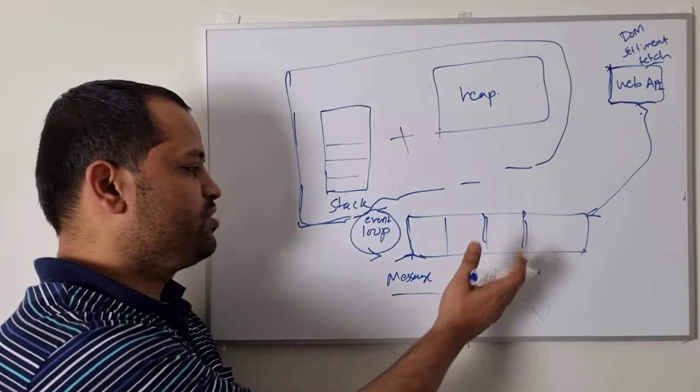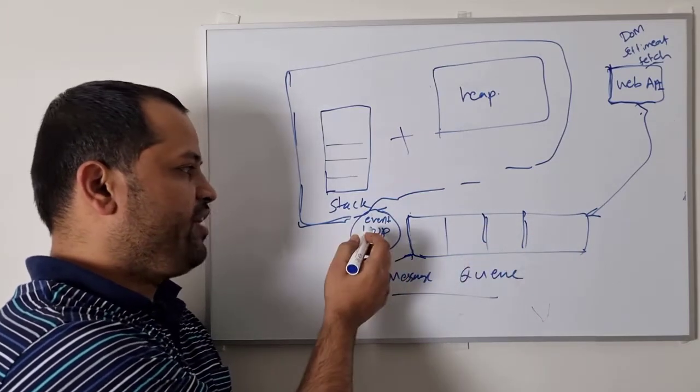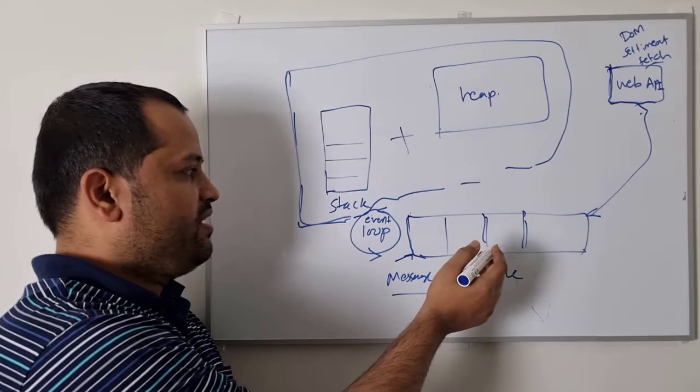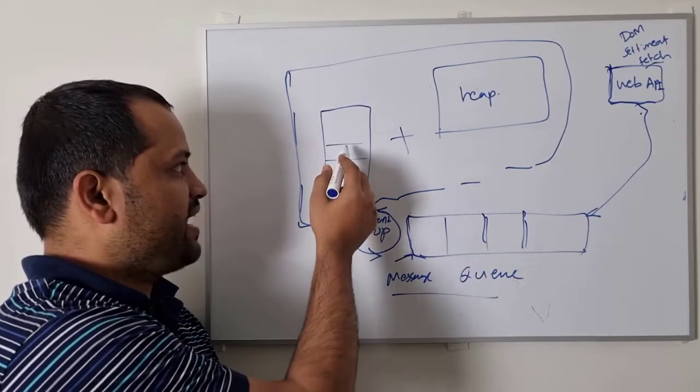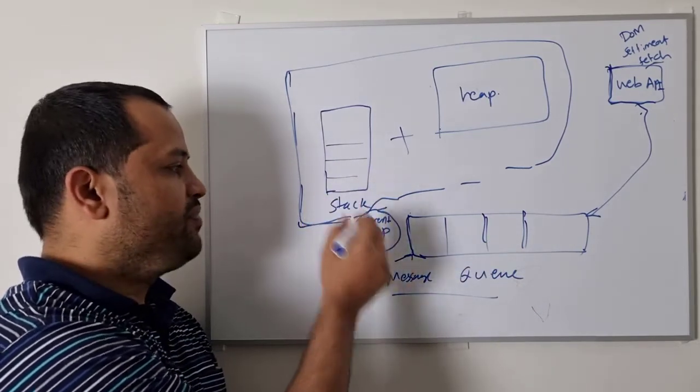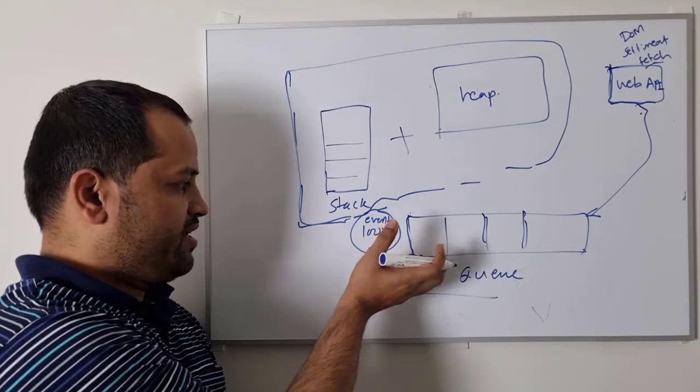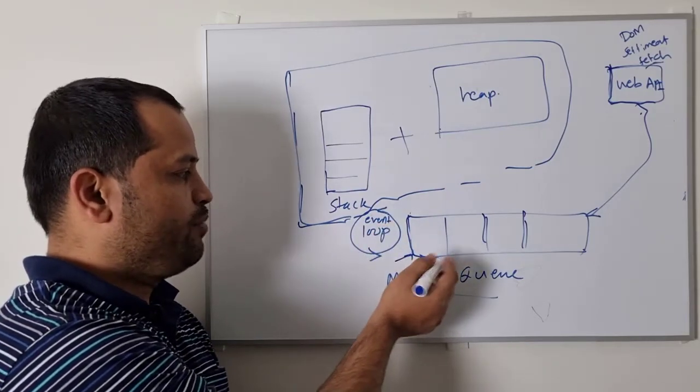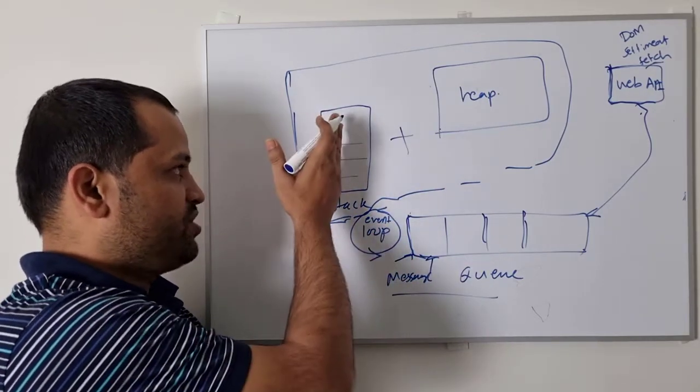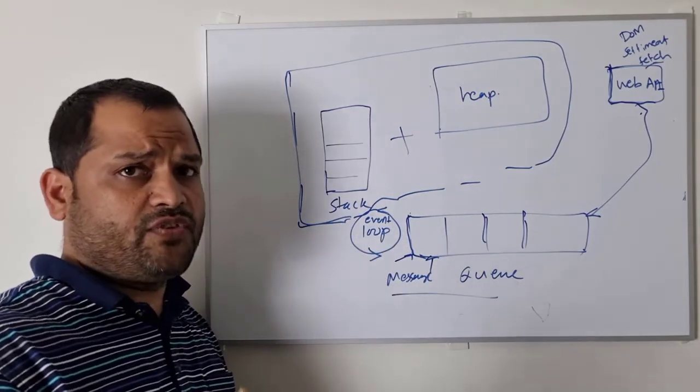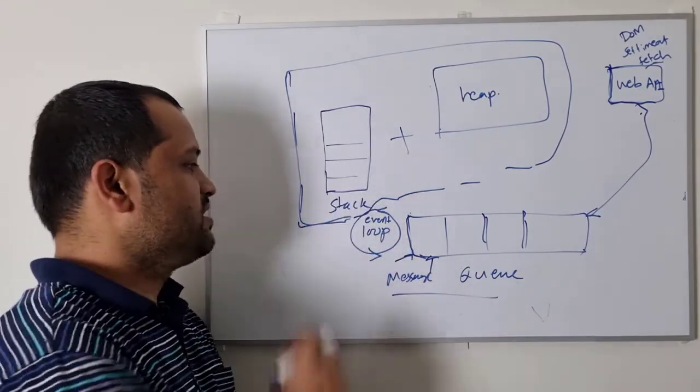When the message comes into the message queue, there is an event loop which is constantly calling this message queue. And then whenever the stack is empty, this JavaScript stack is empty, one of the messages will be taken out, the first message in this queue will be taken out and then it will be processed. So basically this message is nothing but a kind of function that gets executed on this stack.